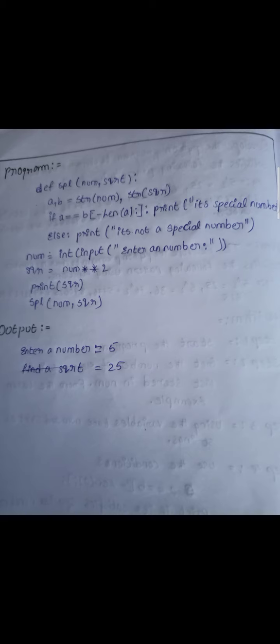Use the condition: if a doubled equals b (closing bracket), minus len of a, with colon print. Print if it satisfies special numbers or not.